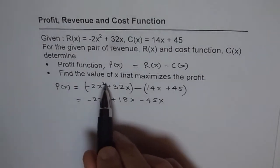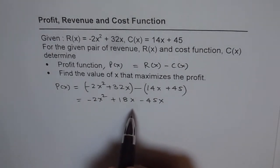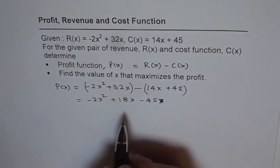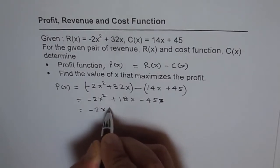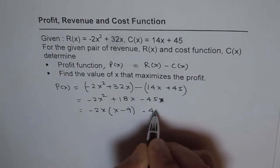Now, if we have to find the value of x that maximizes the profit, what we can do is, we can do partial factoring and then figure it out. So, partial factoring, let us factor the first two terms. We will get -2x is a common factor, so left with x - 9, minus 45.